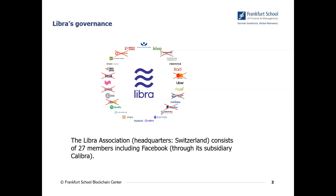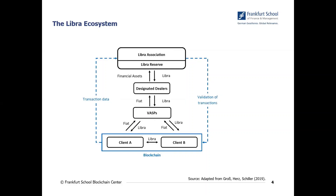Looking at the consortium, you can see different types of companies: e-commerce companies, payment companies, NGOs, and blockchain development companies — a nice mixture with large user bases. Besides Facebook, well-known players such as Spotify and Uber are also part of the Libra Association and therefore belong to the governance system behind Libra.